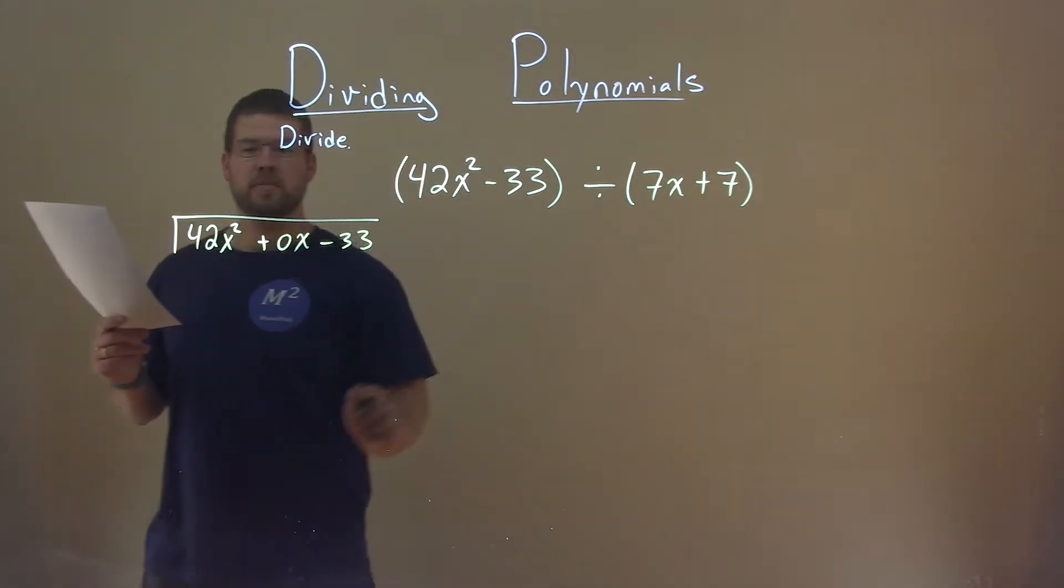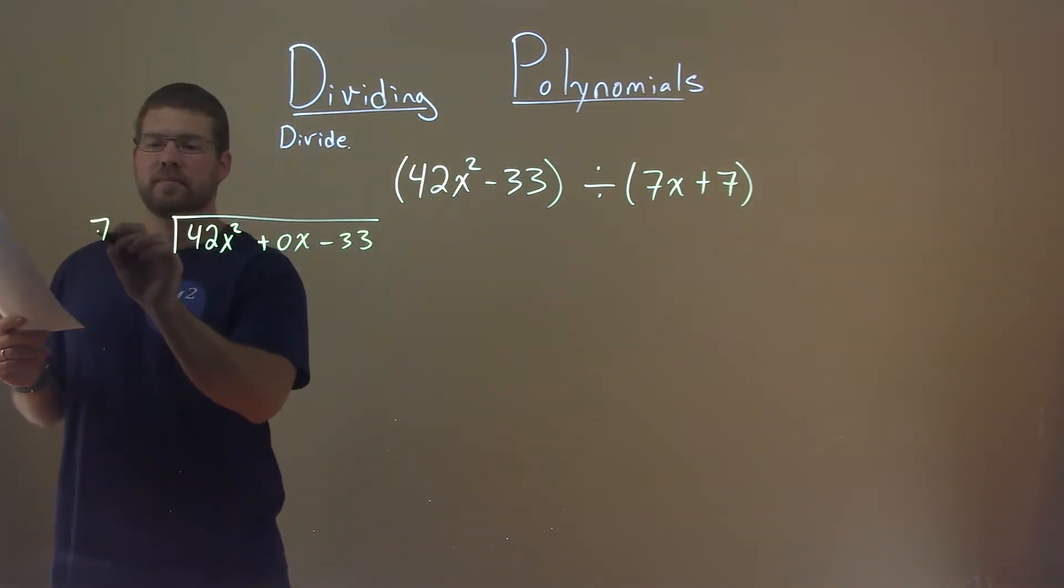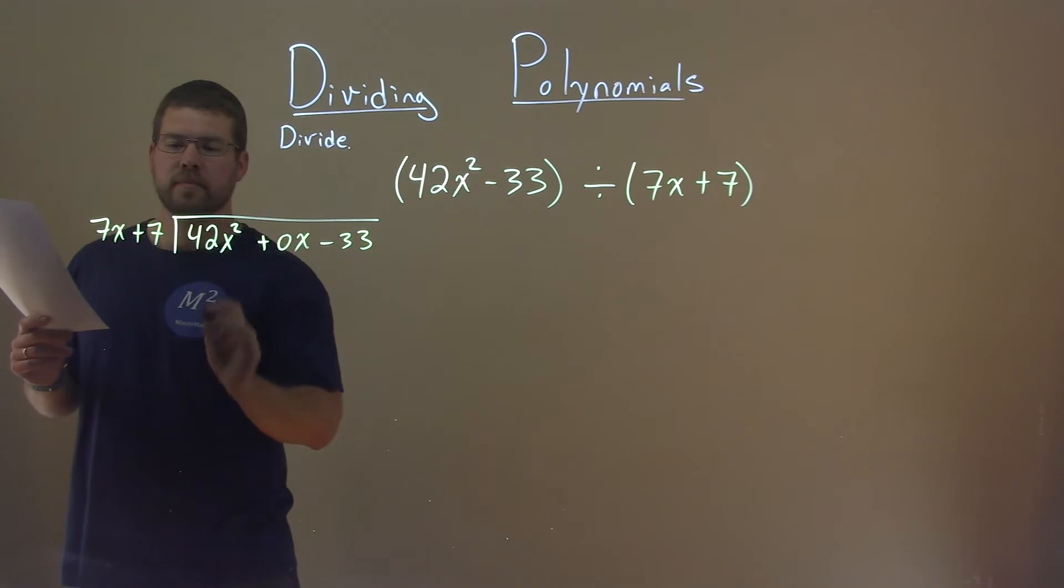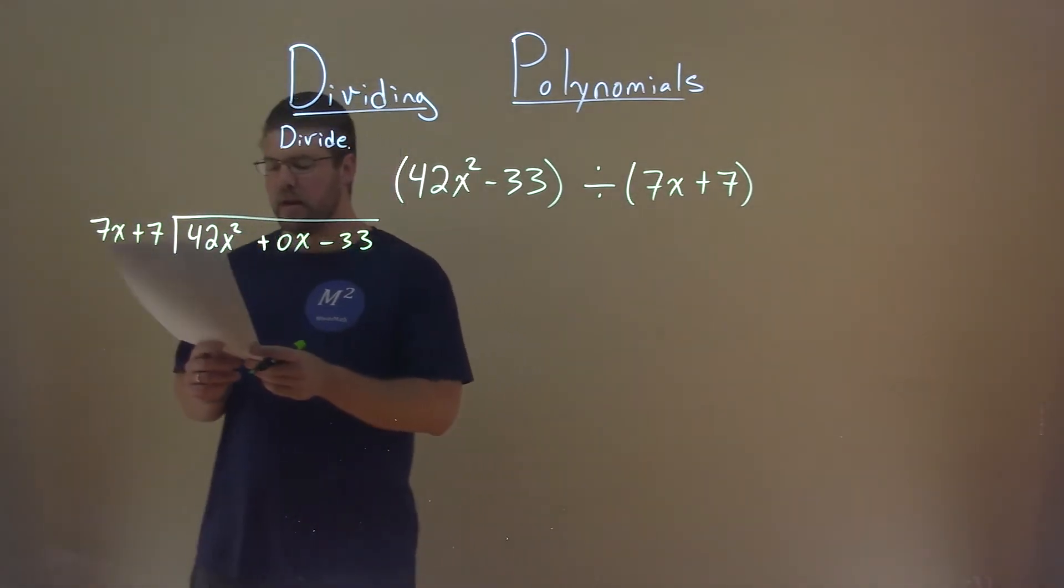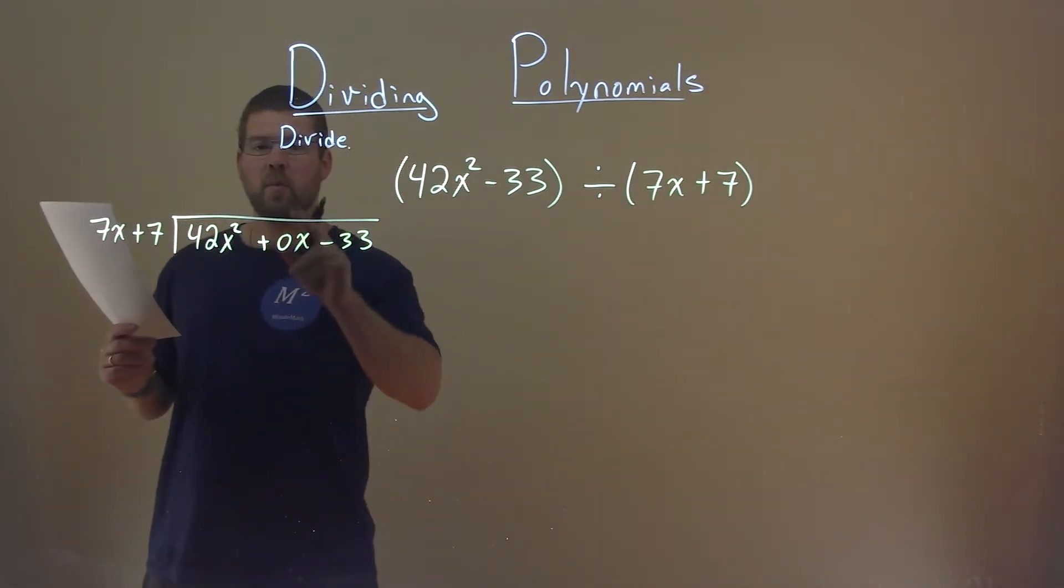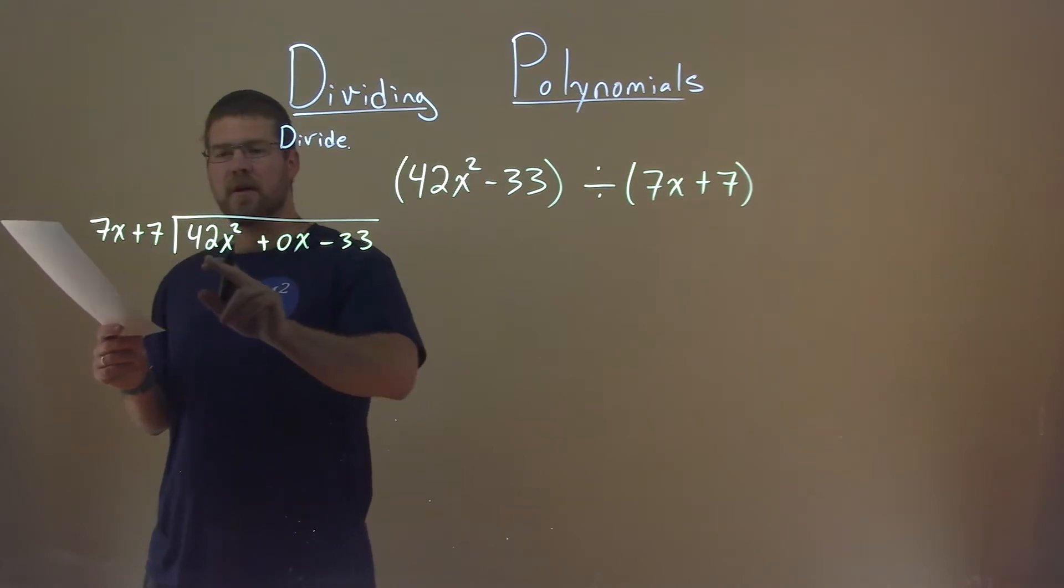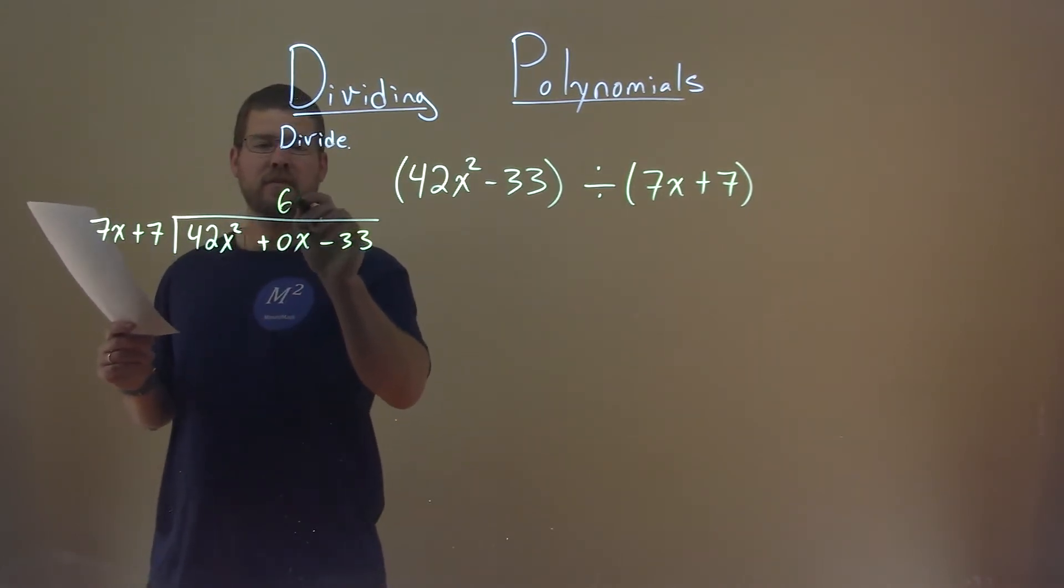It's being divided by 7x plus 7, put that out here. All right. Now we ask ourselves, what times 7x gets us 42x squared? And that's going to be a 6x.